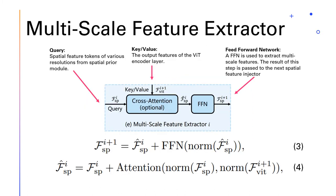The final module of the VIT adapter is the multi-scale feature extractor. In contrast to the feature injector, the output features of the VIT encoder are now used as the key and value, and the spatial features from the spatial prior module are used as the query. The result of this cross-attention is then passed through a feed-forward network to extract multi-level features from the VIT. This is important because VITs normally have a fixed resolution locked to the patch size, and this allows the VIT to make much better dense predictions for smaller resolutions than the patch size. These stages may be repeated L times, once for every VIT encoder used in the model.